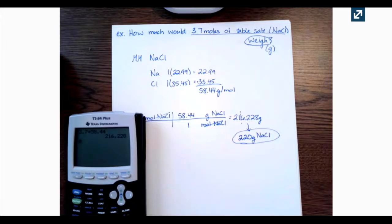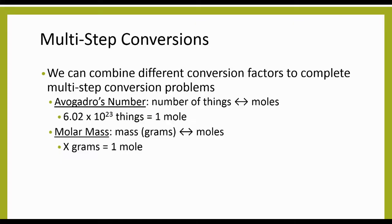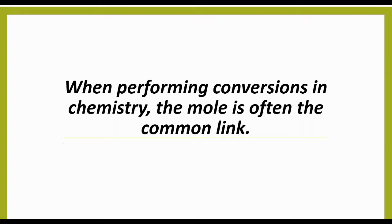We can also do multi-step conversions, combining different conversion factors. A reminder of two we've discussed: Avogadro's number, which relates the number of things — atoms, molecules, formula units — to moles, where 6.02 times 10 to the 23rd things equals one mole. And molar mass, which relates moles and mass in grams. One really important thing: in chemistry conversions, the mole is often the common link. If you're not sure what to do, your first step is usually to get to the mole, and then from there you can get to your final answer.